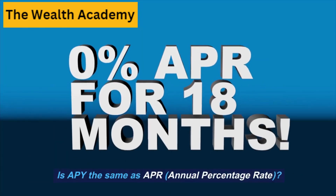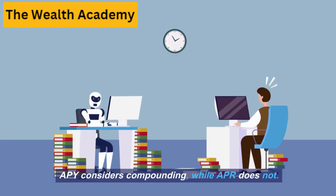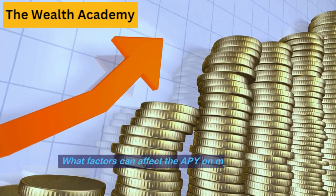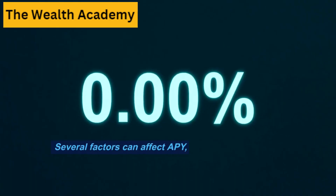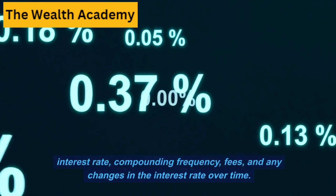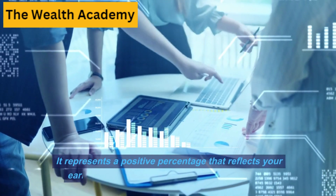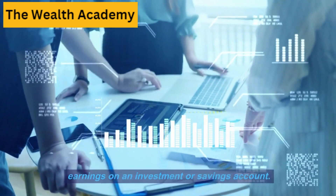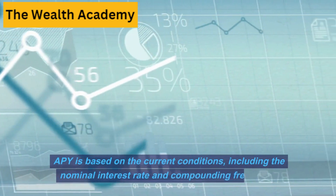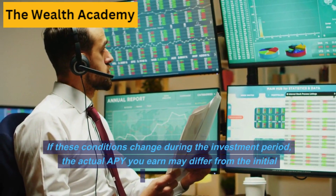Is APY the same as APR (annual percentage rate)? No, APY and APR are different. APY considers compounding, while APR does not. APR is typically used for loans and credit cards to represent the cost of borrowing. What factors can affect APY? Several factors can affect APY, including the nominal interest rate, compounding frequency, fees, and any changes in the interest rate over time. Can APY be negative? No, APY cannot be negative — it represents a positive percentage reflecting your earnings. Is APY guaranteed for the entire investment period? APY is based on current conditions; if those conditions change during the investment period, the actual APY you earn may differ from the initial calculation.